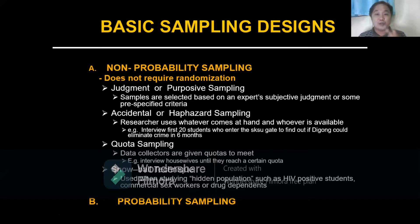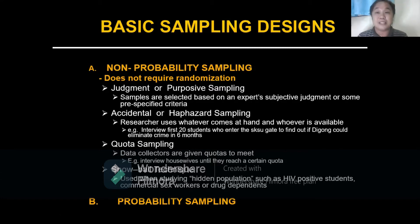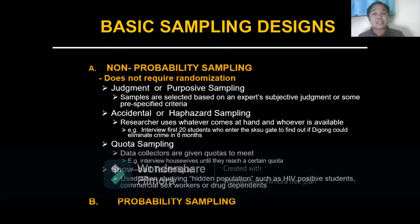There are two types of basic sampling designs: number one, we have the non-probability sampling, and the second is the probability sampling. Non-probability sampling does not require randomization. The first example is judgmental or purposive sampling, meaning samples are selected based on expert subjective judgment or pre-specified criteria.